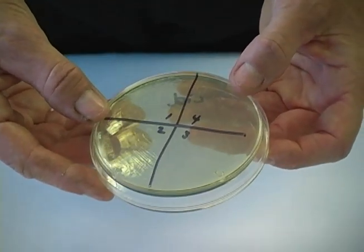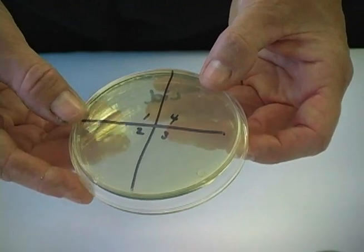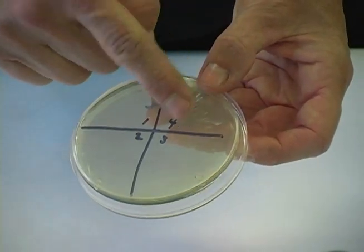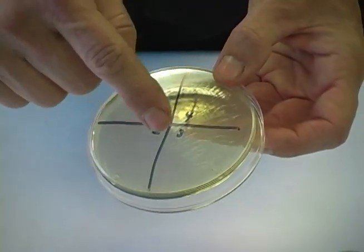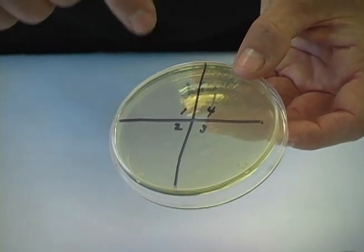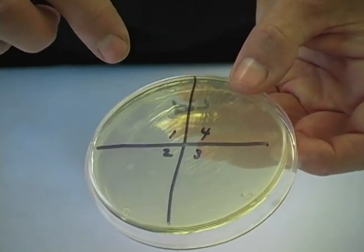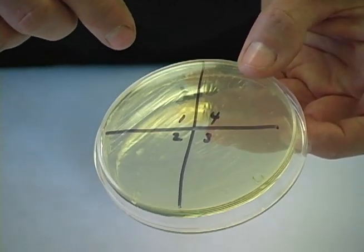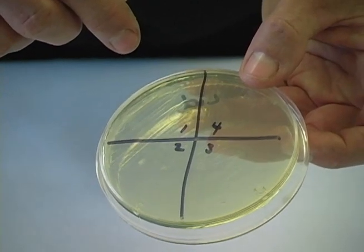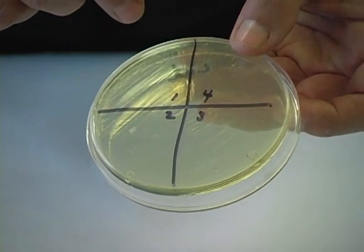When we're first learning to streak our plate, often it's helpful to draw quadrants on the bottom of the plate: quadrant one, quadrant two, quadrant three, and quadrant four. This will help us spread our microbes over the correct quadrant and will prevent confusion during the streaking process.